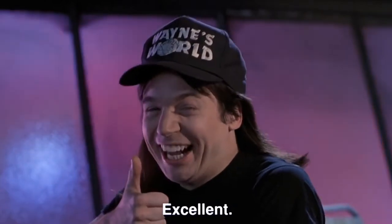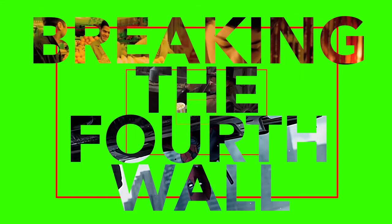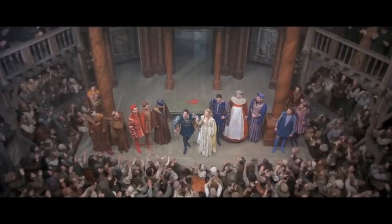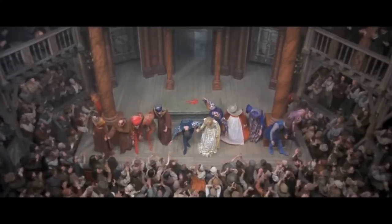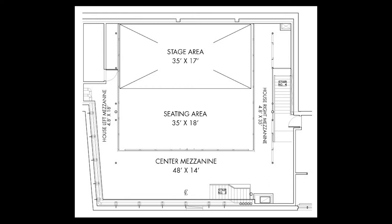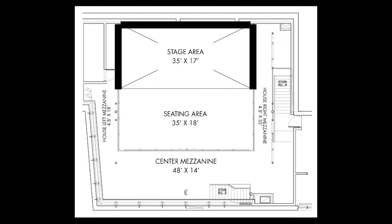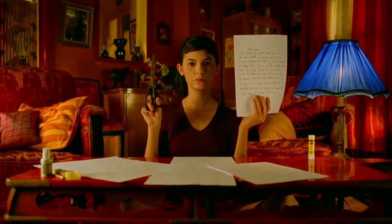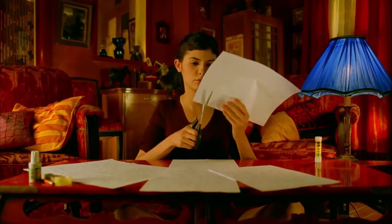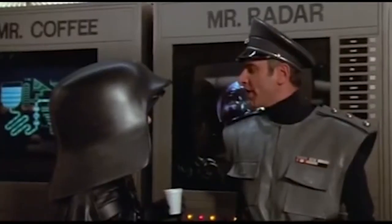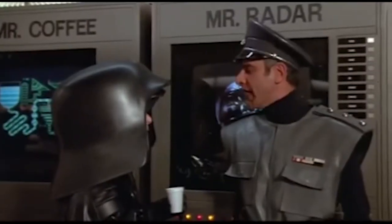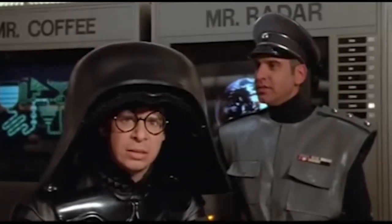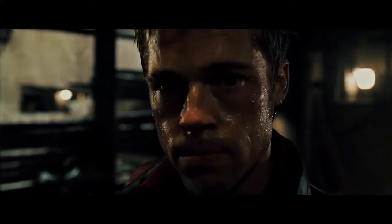The fourth wall actually originated in theater productions during the 1800s. On stage, a box set has three walls. The audience is supposed to imagine that there is a fourth wall separating them from the actors. The fourth wall is the invisible barrier between reality and story — in other words, the characters in a production are not supposed to know that the audience is there.